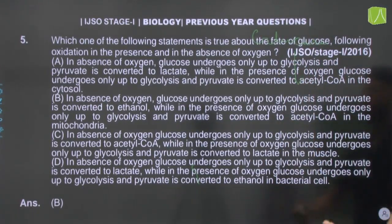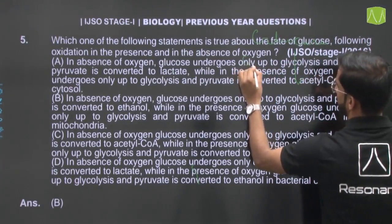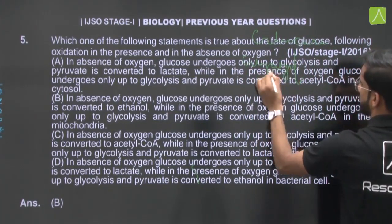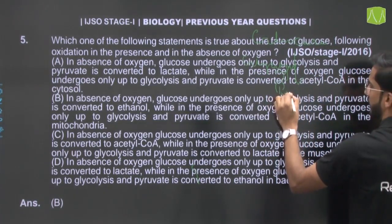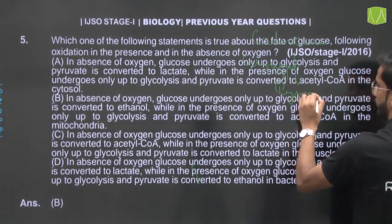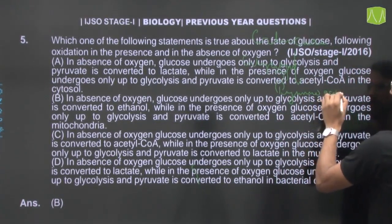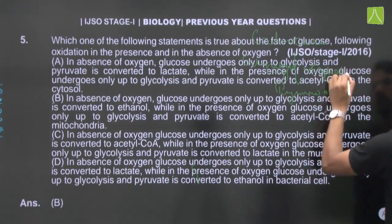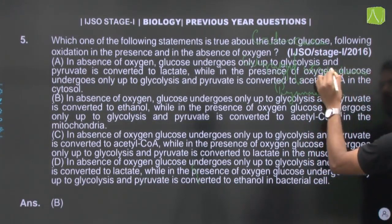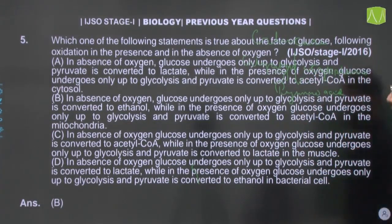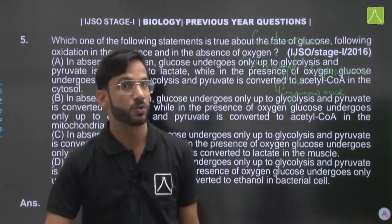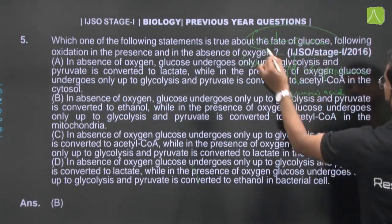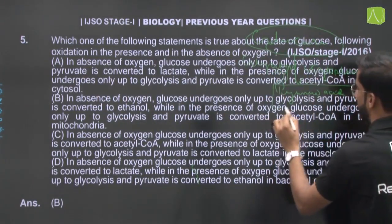Glucose is broken down through glycolysis, which happens in the cytoplasm. The six-carbon glucose molecule converts to the three-carbon molecule pyruvic acid. After that, pyruvic acid moves toward the mitochondria for final oxidation. Before that, there is a link reaction forming acetyl coenzyme A, which also occurs in the mitochondria.